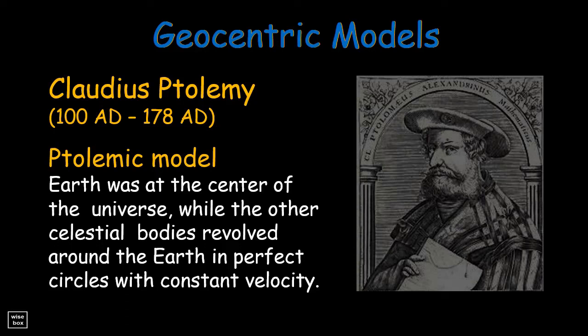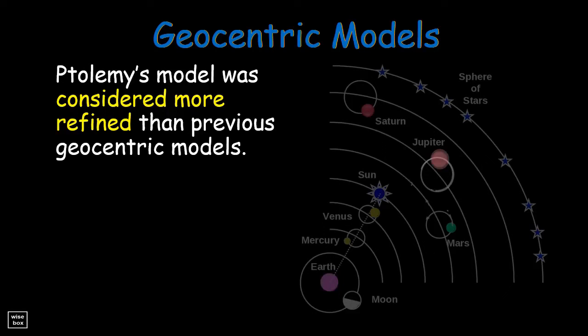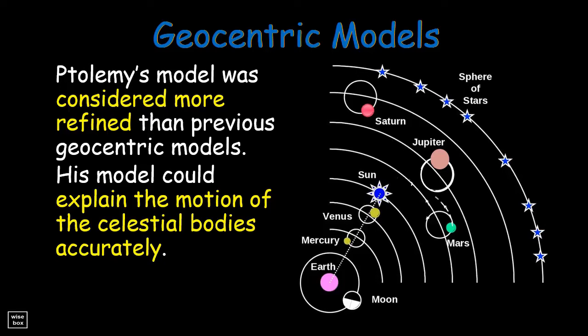In his model, he assumed that Earth was at the center of the universe, while the other celestial bodies revolved around the Earth in perfect circles with constant velocity. Ptolemy's model was considered more refined than previous geocentric models. His model could explain the motion of the celestial bodies accurately, like the retrograde motion of the planets.